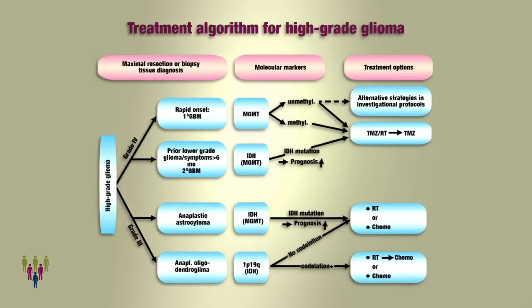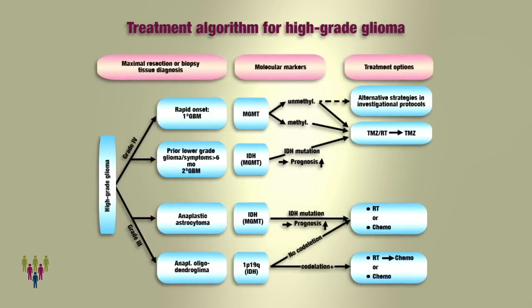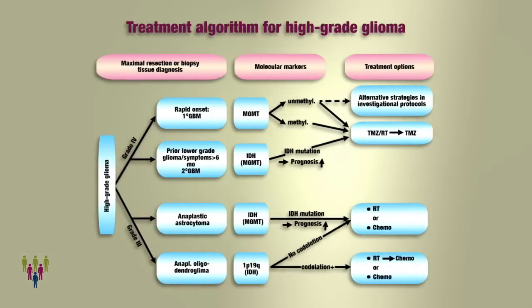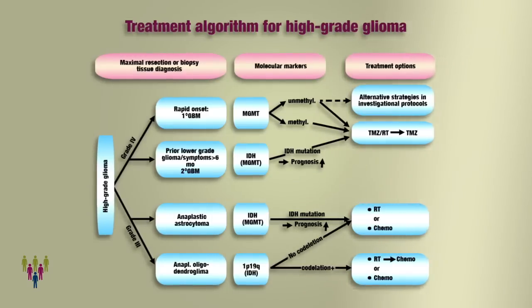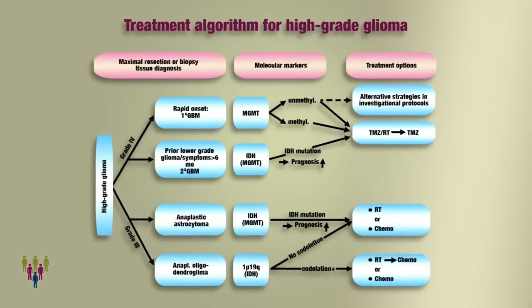Either go for chemotherapy alone or radiotherapy, at least in patients who are not fit enough for combined radiochemotherapy. Another very important marker is IDH — that's a gene mutation, the IDH mutation.